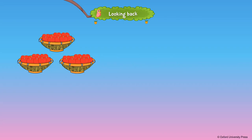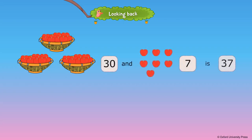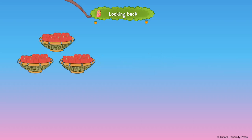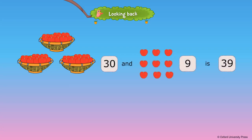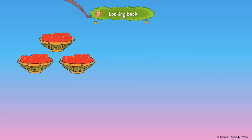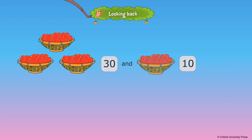If seven more apples are added, we will have 37 apples. 30 and 7 is 37. If eight more apples are added, we will have 38 apples. 30 and 8 is 38. If nine more apples are added, we will have 39 apples. 30 and 9 is 39. If 10 more apples are added, we will have 40 apples. 30 and 10 is 40.